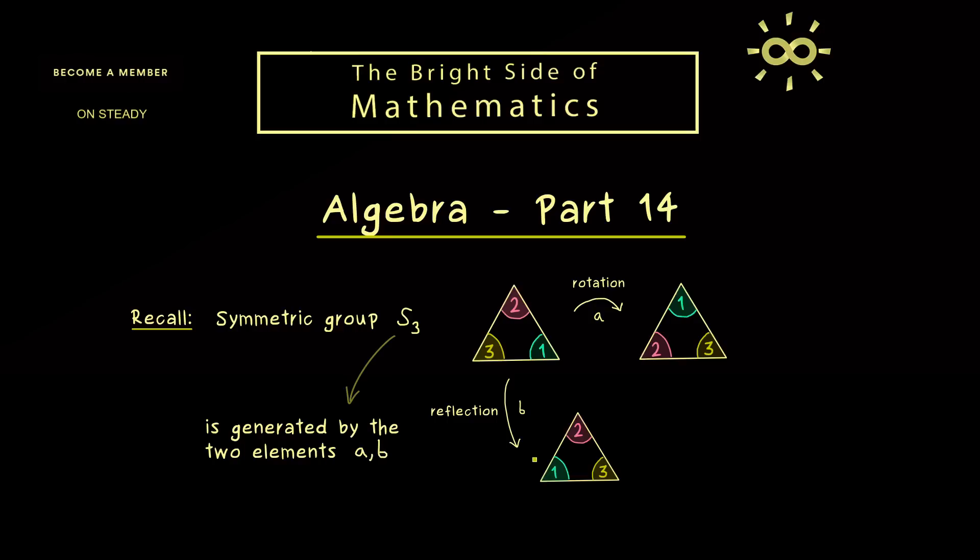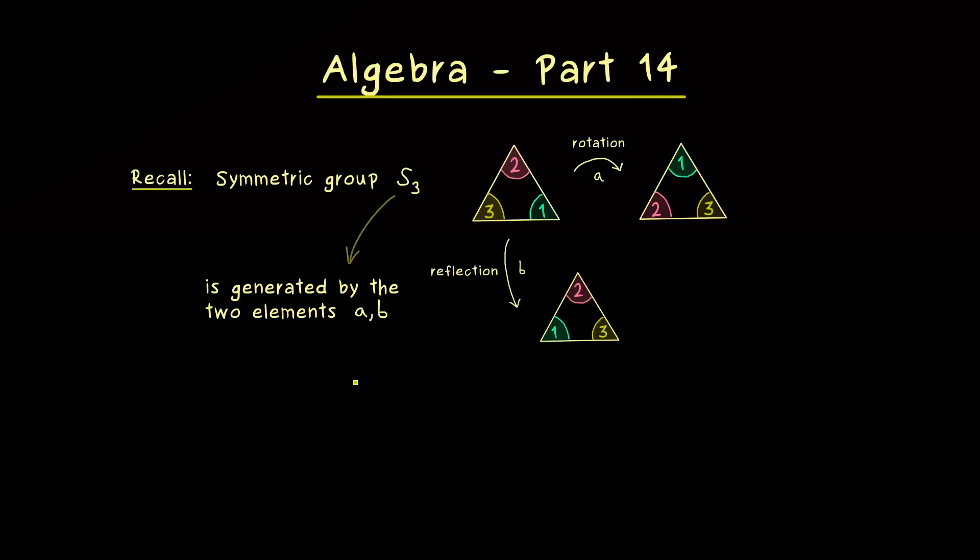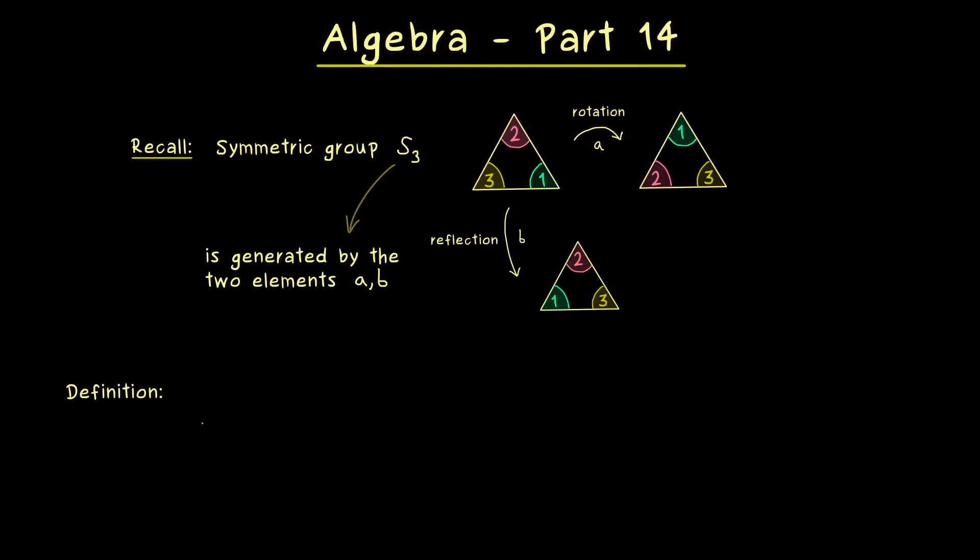How this works in practice for S3 we have seen in the last video, but now obviously we need a general definition for that. So the question is, what does it actually mean to say that a group is generated by some elements?